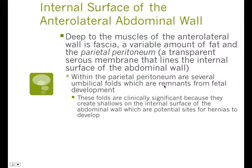Deep to the muscles of the anterolateral wall is fascia, a variable amount of fat, and the parietal peritoneum. The parietal peritoneum is a transparent membrane that lines the internal surface of the abdominal wall. Within that parietal peritoneum are several umbilical folds, which are remnants of fetal development. These folds are significant because it's where you tend to develop hernias.